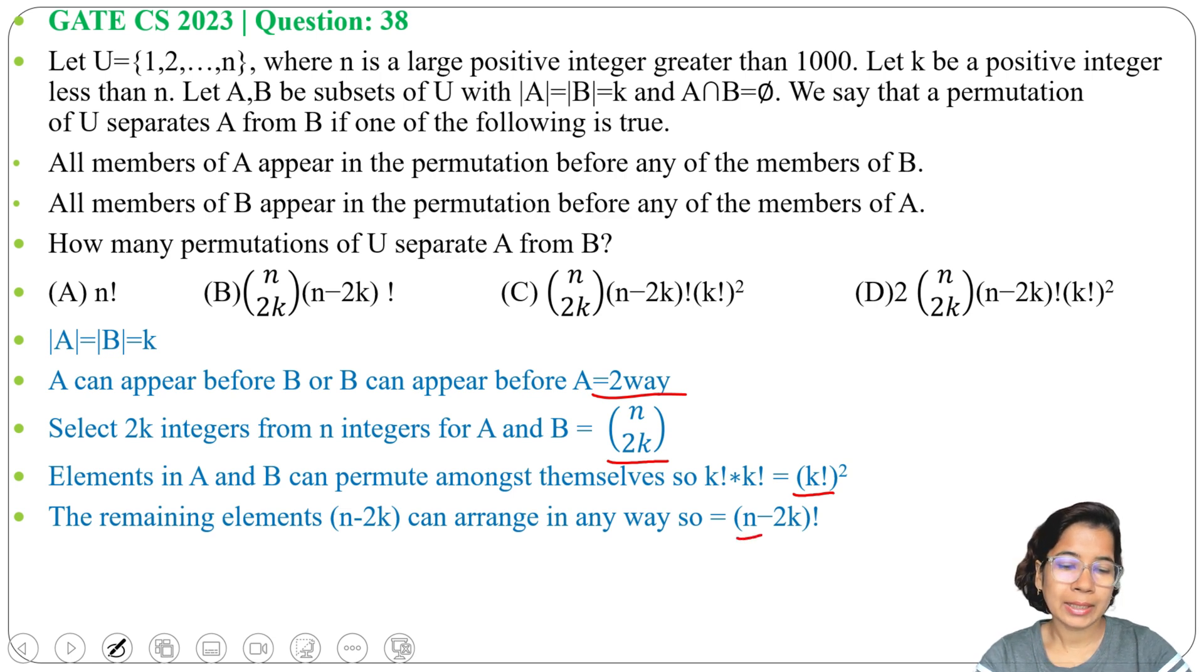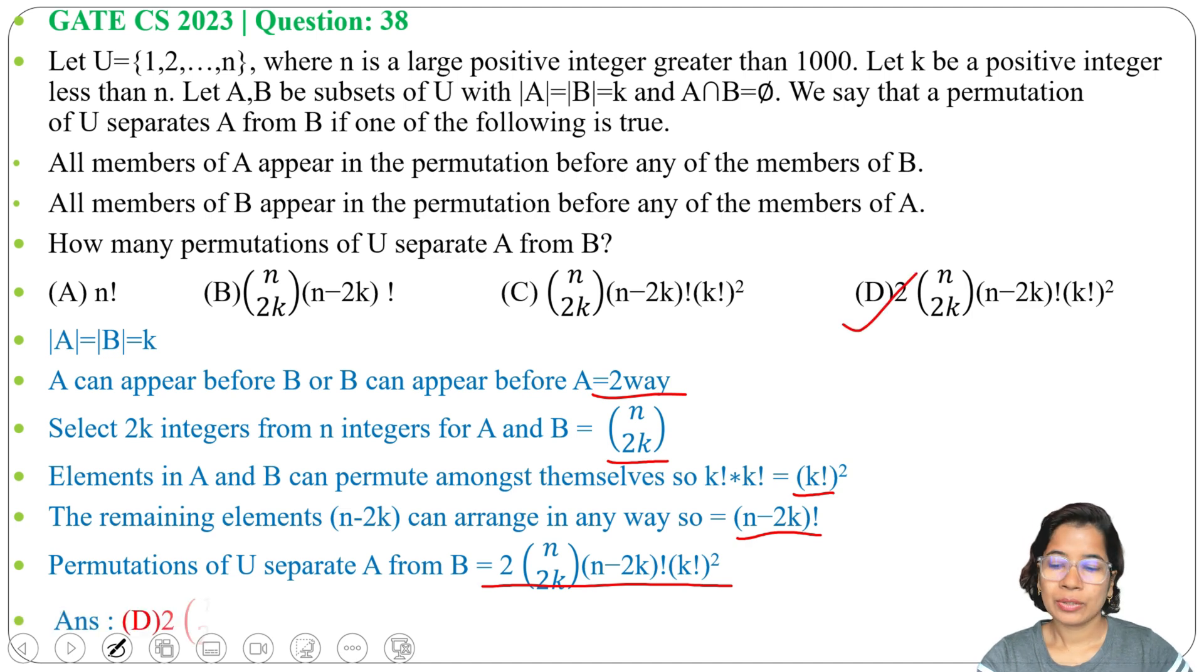So total it will be 2 × C(n,2k) × (n-2k)! × (k!)². It is present in option D. That's why the answer will be option D: 2 × C(n,2k) × (n-2k)! × (k!)².